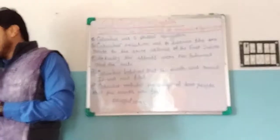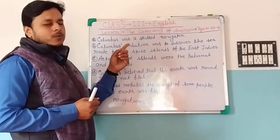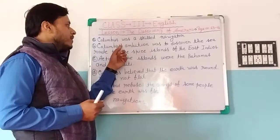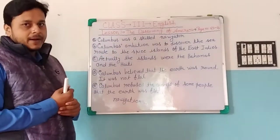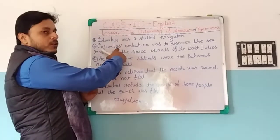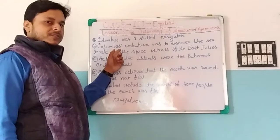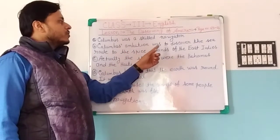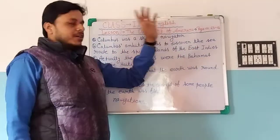What was his ambition? When we write the answer, remember to start with the noun. So 'this means Columbus' — write Columbus apostrophe. But remember, don't give apostrophe S if the word ends with S — that is the rule of grammar. Columbus's ambition was to discover the sea route to the spice islands of the East Indies.